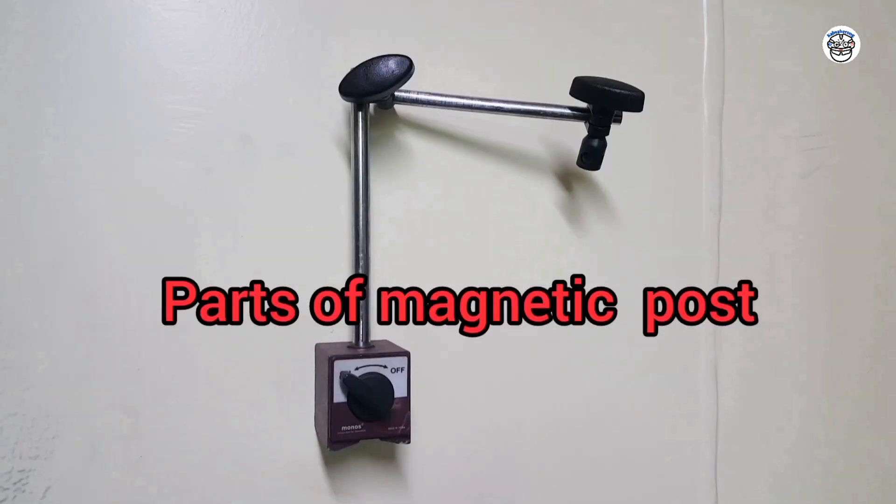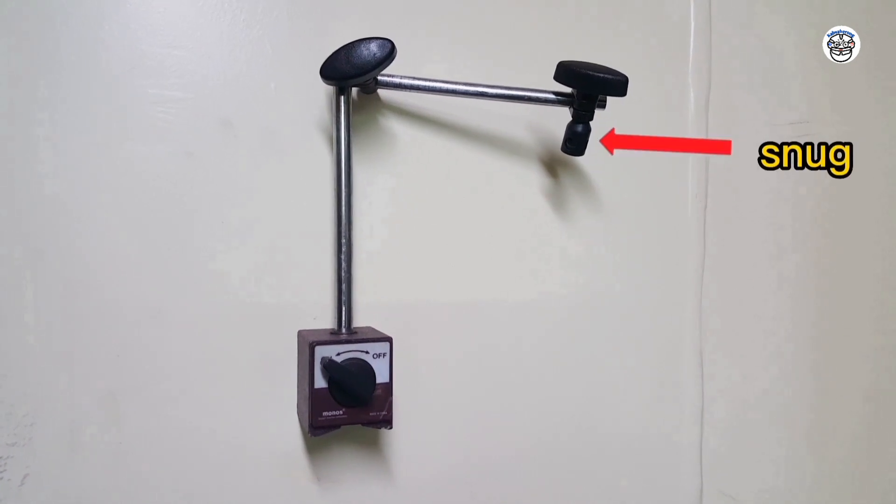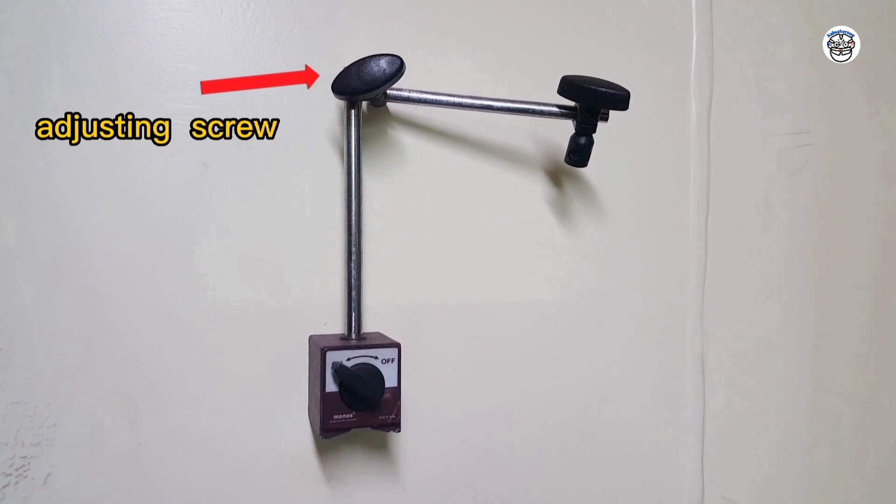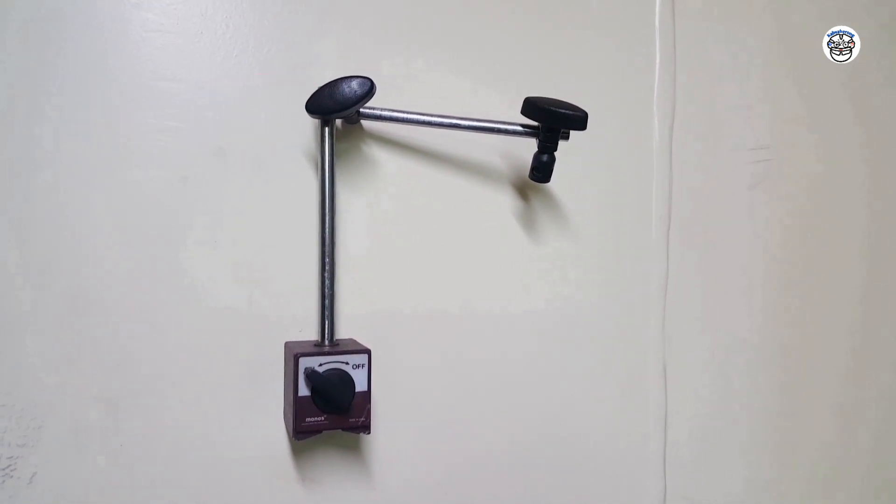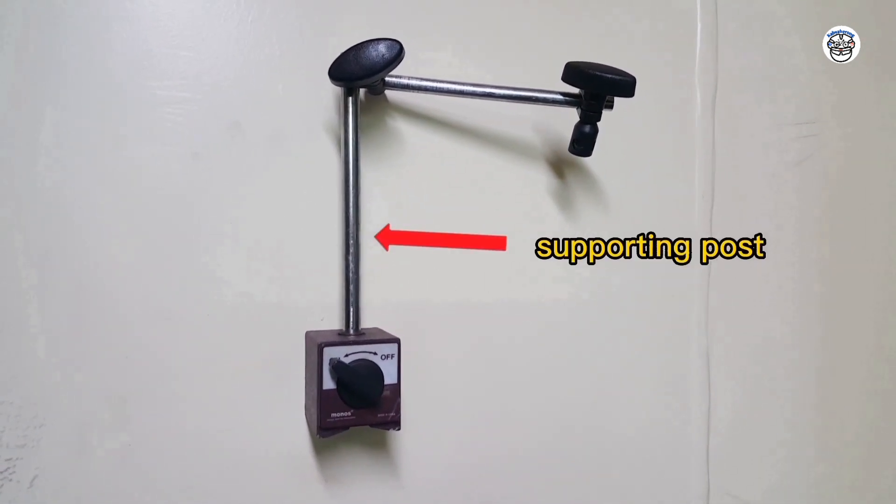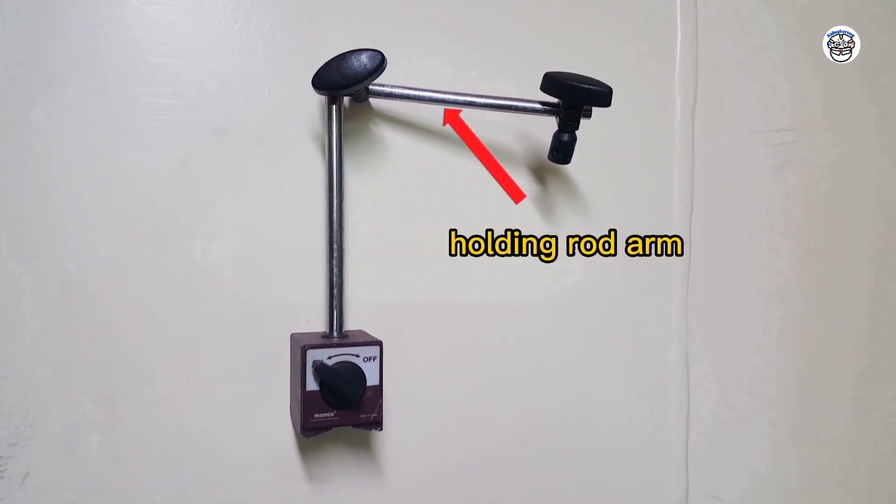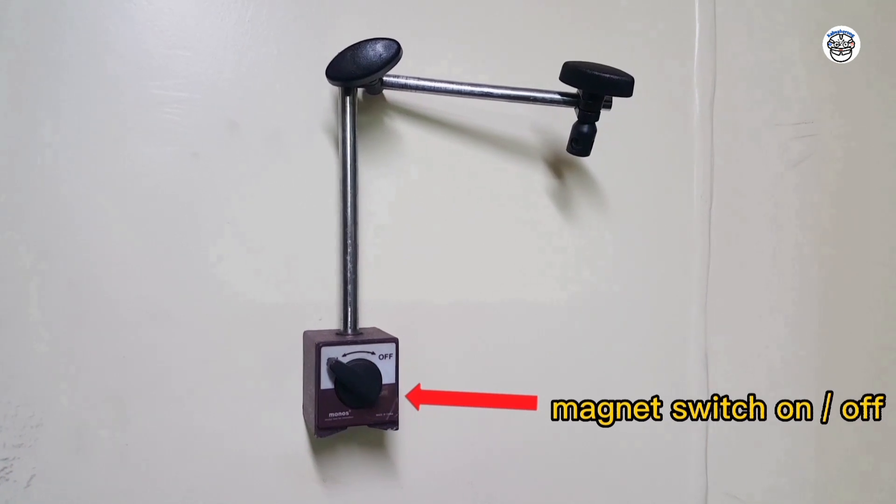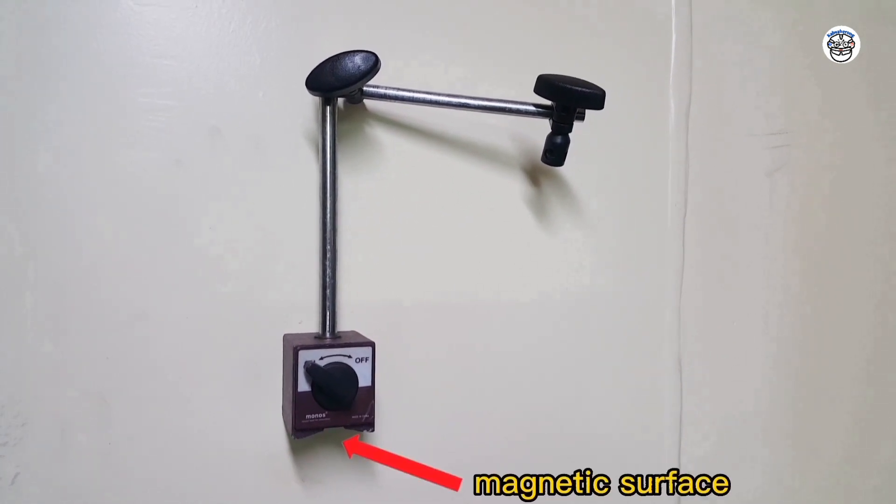Parts of magnetic post: snub, adjusting screw, supporting post, holding rod arm, magnet switch on and off, magnetic surface.